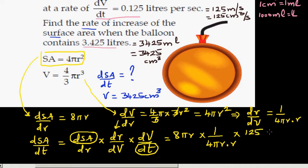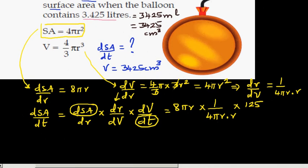Multiplying through: dSA/dt = 8πr × (1/(4πr²)) × 125. Just to understand the units — this is centimeter squared per second. The π and π cancel, and r and r² simplify leaving r in the denominator, and 4 goes into 8 twice, so what remains is: dSA/dt = 250/r.